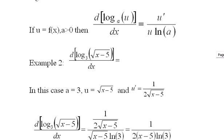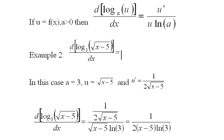Now we apply the formula directly. I put u prime on top, u in the denominator, and ln three here, then simplify. Bringing the square root up to the denominator gives x minus five, and you get the final result — the derivative of this function.